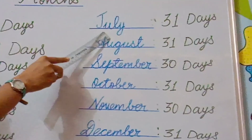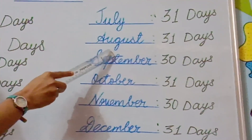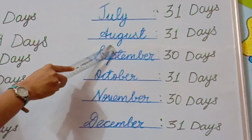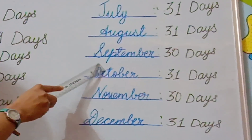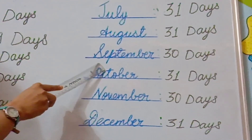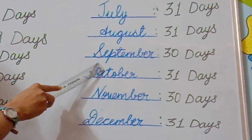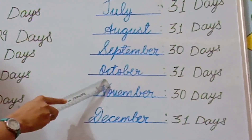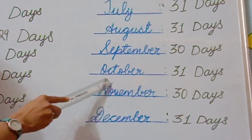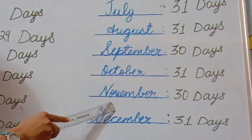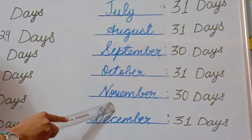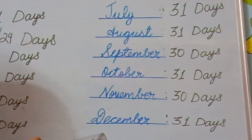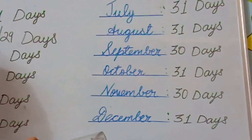July, August, September. O-C-T-O-B-E-R October. N-O-V-E-M-B-E-R November. D-E-C-E-M-B-E-R December.